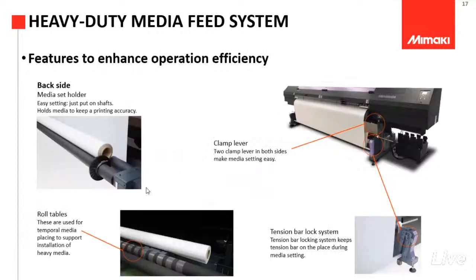Ini adalah heavy duty media feed system. Jadi mesin ini bisa dimasukkan bahan yang memang besar, 3,2 meter. Beratnya ini bisa sampai beberapa kilo. Terus juga di sini ada tension-nya, sehingga nanti bahan yang terpulur bisa terjaga keketatannya supaya nanti ketika di-print hasilnya bagus.